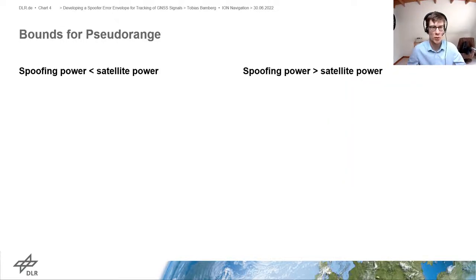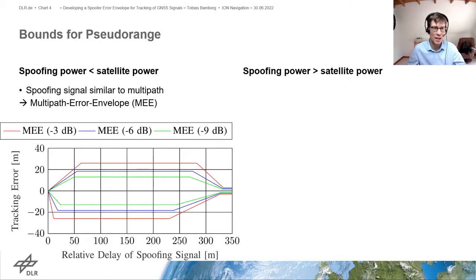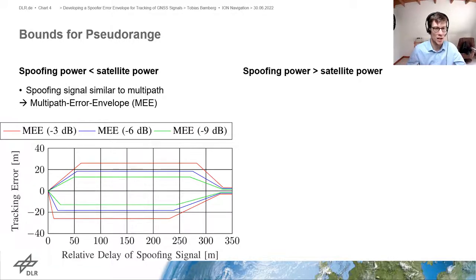To define a concrete bound we distinguish two cases. First, the spoofing signal power is lower than the satellite signal power, meaning the spoofing signal is quite similar to multipath. For multipath we already have a bound — the so-called multipath error envelope — which gives a lower and upper bound of the tracking error as a function of the relative delay of the spoofing signal. In this plot we have shown it for three different power ratios, all of which ensure the spoofing signal is lower than the satellite signal power.